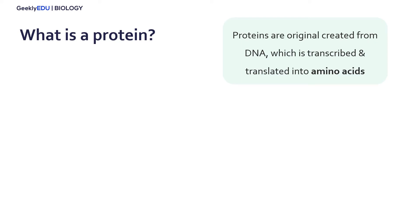First, we have to start with the question: what is a protein? Proteins are basically what is used to create all different parts of our cells and facilitate different cell processes in our bodies. And they're originally created from DNA, which is transcribed into RNA, which is then translated into amino acids.